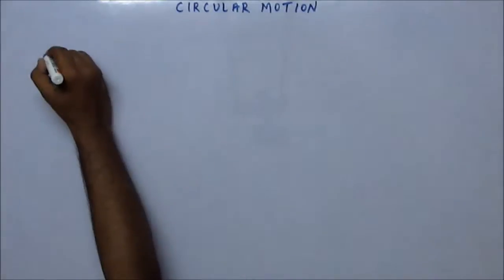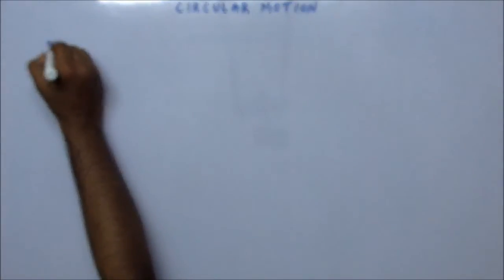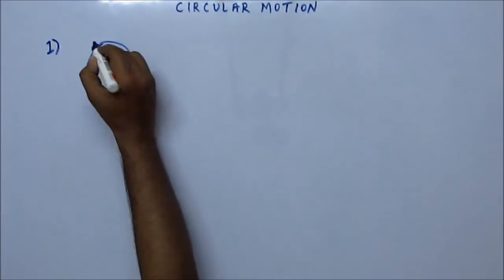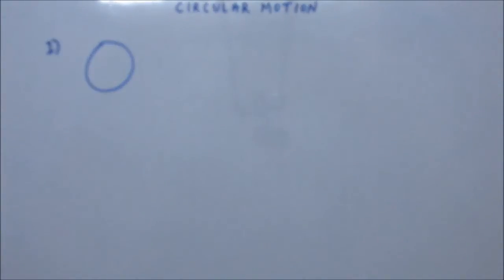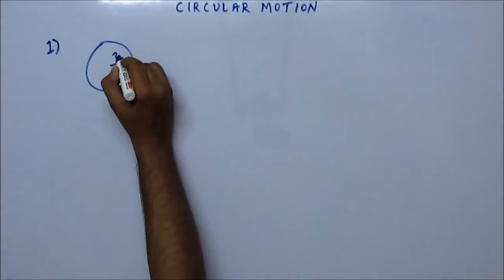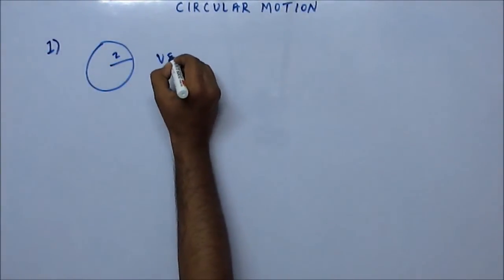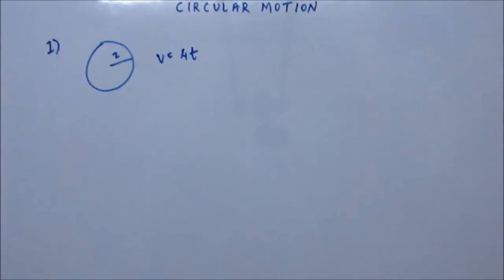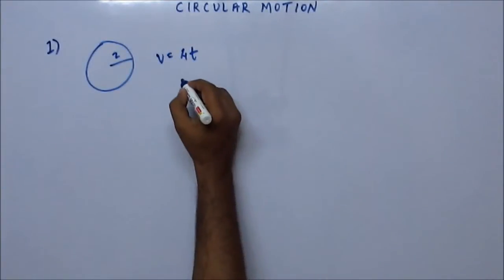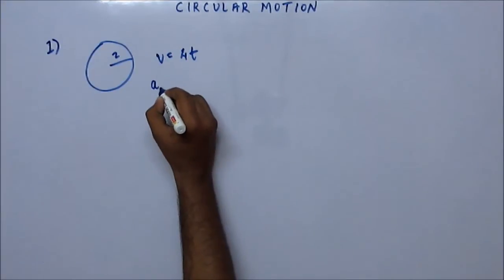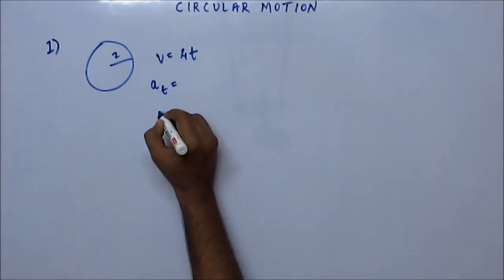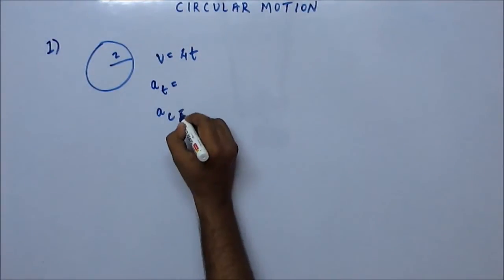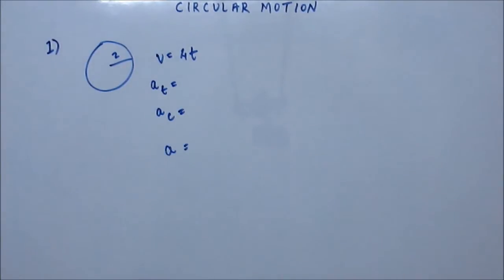Let's try our hand on some problems. The first problem: a particle is going around in circular motion, radius is 2 units and velocity is time-dependent — velocity is 4t, where t is time. You have to find what is the tangential acceleration, what is the centripetal acceleration, and what is the total acceleration for this particle.